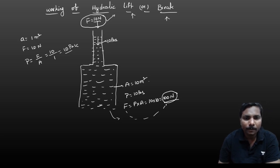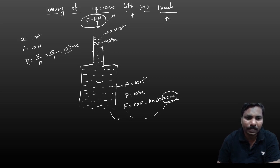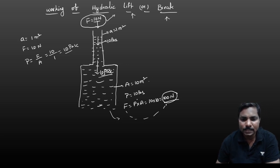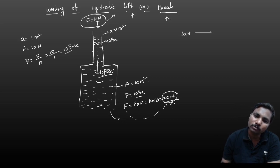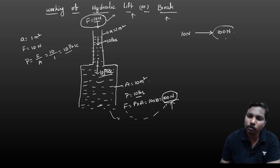Let me summarize: you applied 10 newtons of force over 1 meter square area, so pressure = 10 pascals. With an area of 10 meter square, force = pressure × area = 100 newtons. So 10 newtons is converted into 100 newtons — enough force to stop or lift.